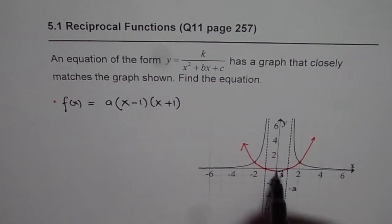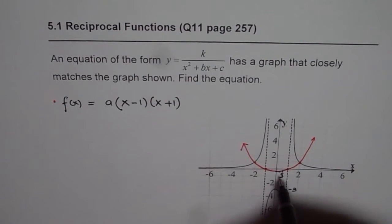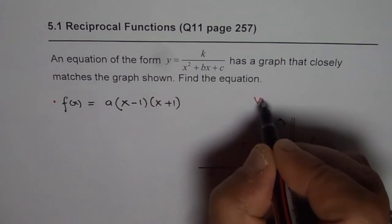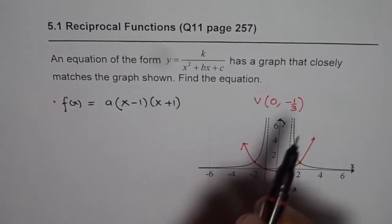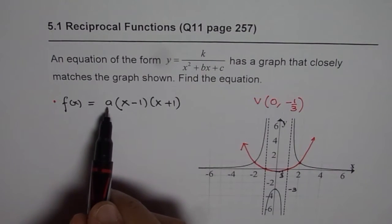Now we can use this vertex, which is at x equals 0. The vertex of this parabola is at x equals 0 and y equals minus 1 over 3. So we find from here that the vertex of the parabola is at 0, minus 1 over 3. So that will help us to find the value of a.